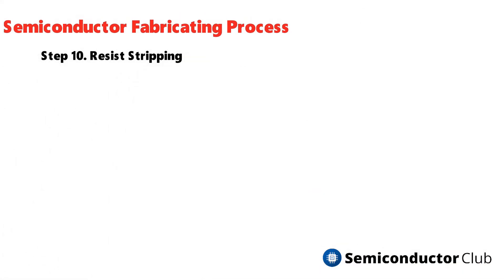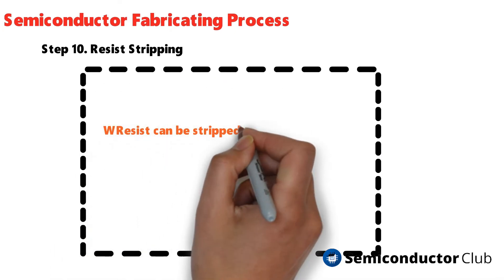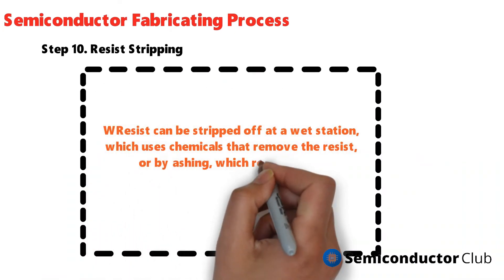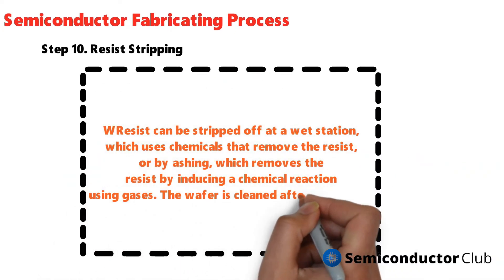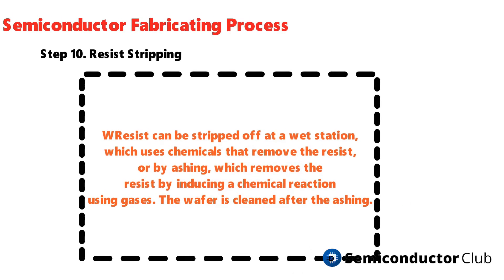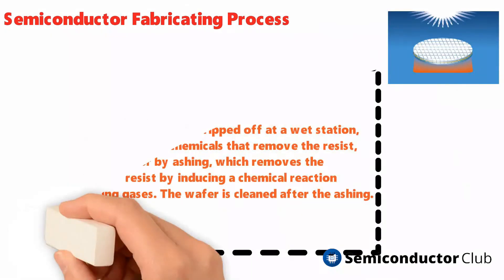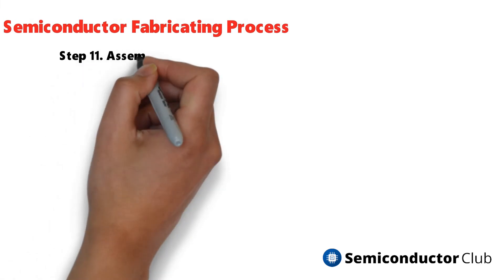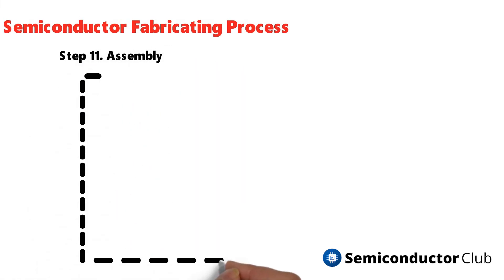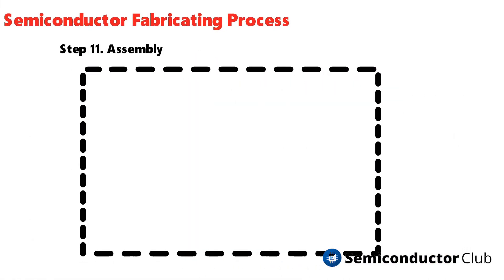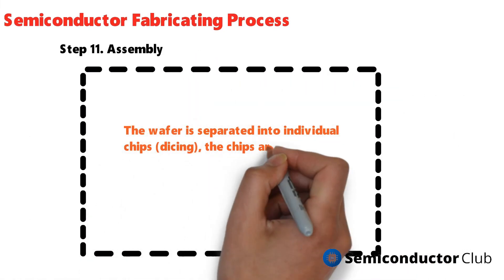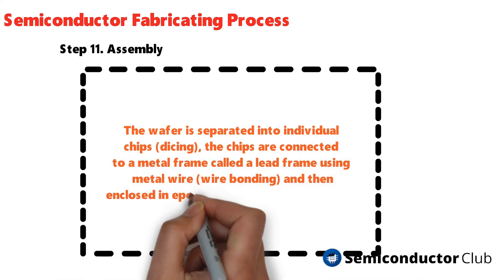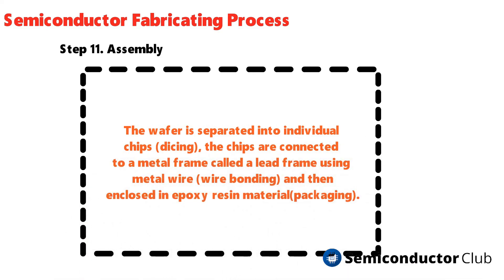Resist stripping: resist can be stripped off at a wet station using chemicals, or by ashing, which removes the resist by inducing a chemical reaction using gases. The wafer is cleaned after ashing. Assembly: the wafer is separated into individual chips by dicing. The chips are then connected to a metal lead frame using wire bonding and enclosed in epoxy resin material during packaging.